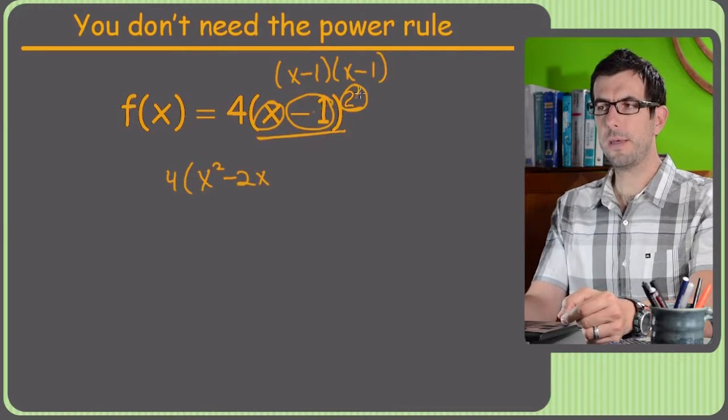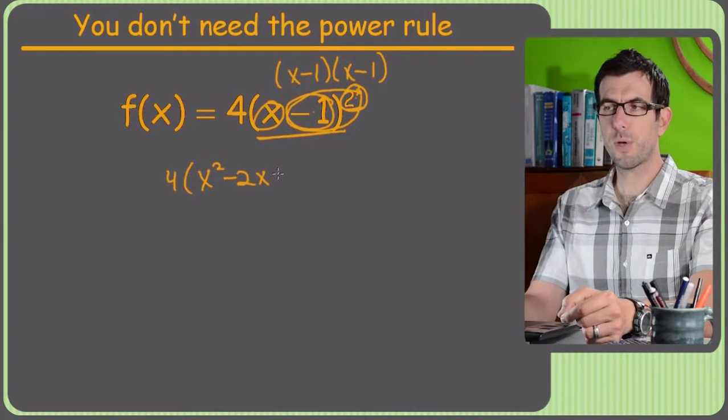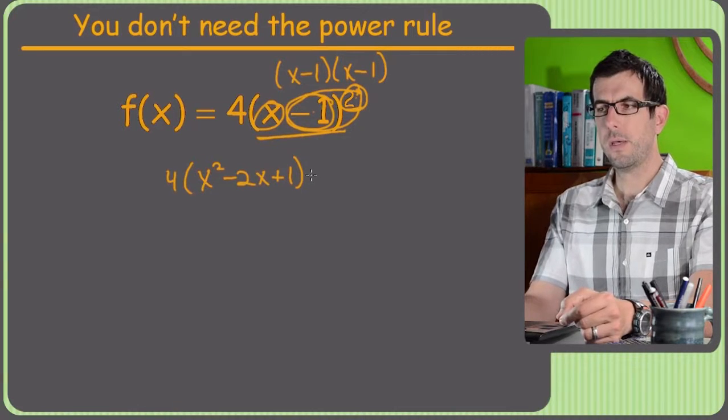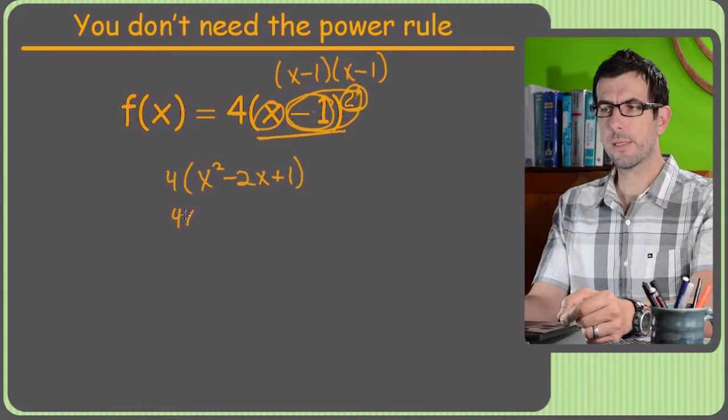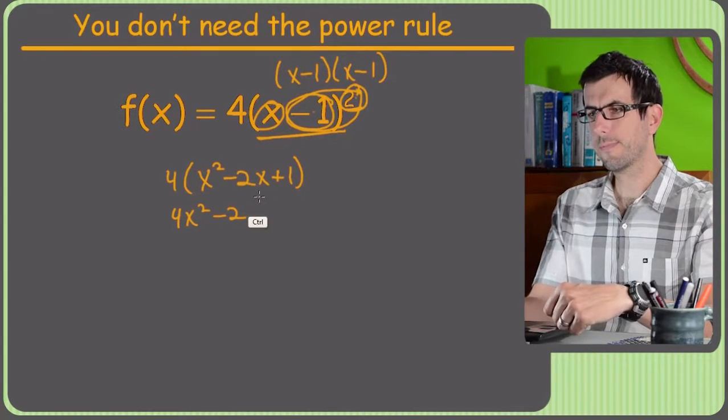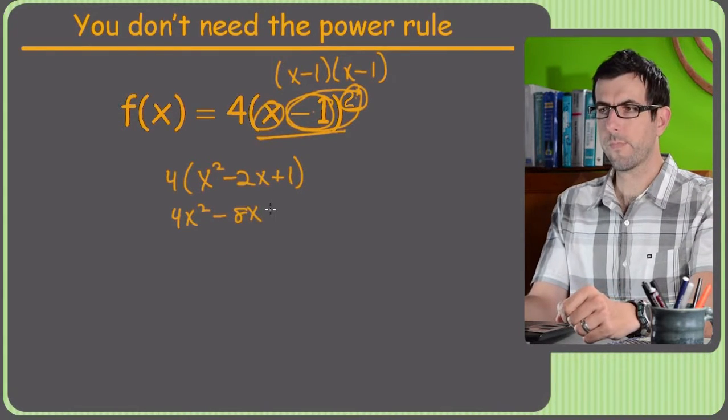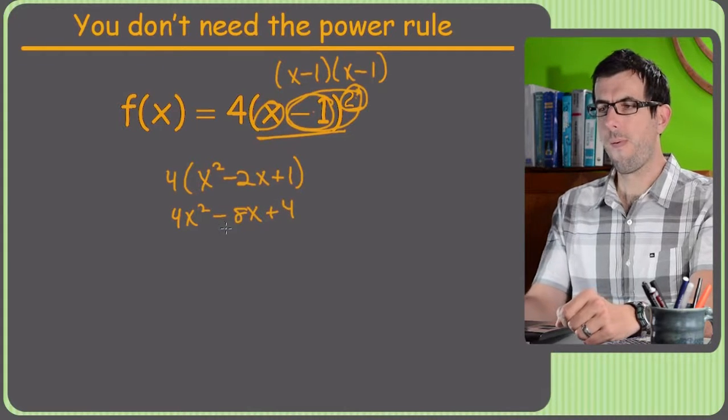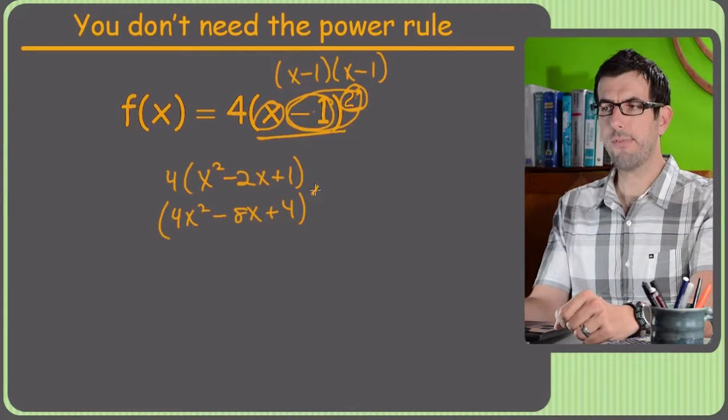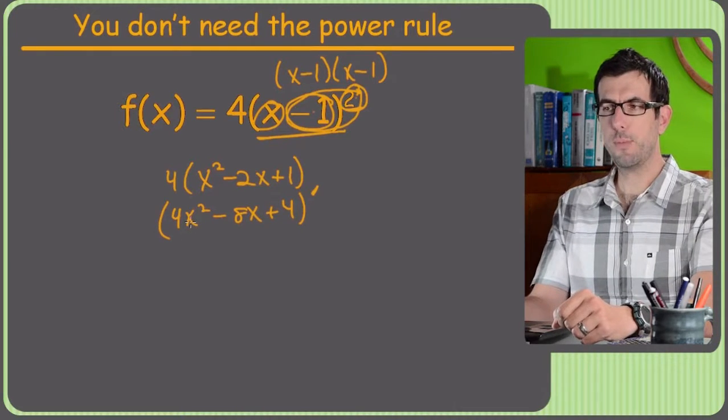And the last term is going to be the second term squared, so negative 1 squared is positive 1. Alright, so that equals 4x squared minus, oops, minus 8x plus 4.